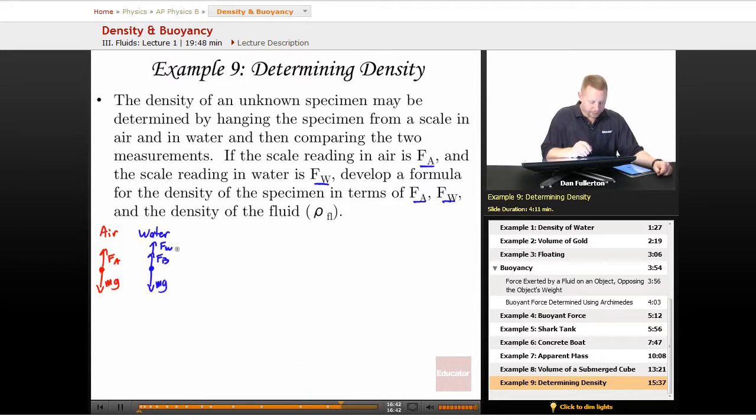Starting with the water we've got FB, the buoyant force, plus the force of the scale when it's in water must be equal to its weight because it's in equilibrium. And we also know that the force of air is equal to MG. So I could rewrite this as FB plus FW equals FA.